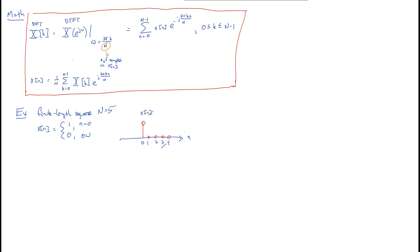So we graph it. Firstly, why are we calling this a finite length sequence of n equals 5? Isn't it also a finite length sequence of length 36, because x of 35 is equal to 0? What's going on with that?